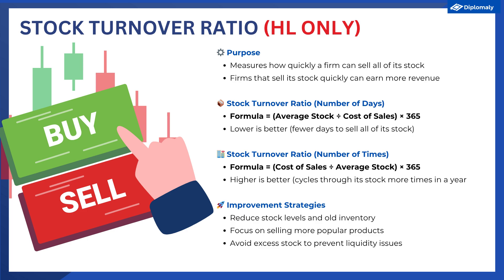The first one is the stock turnover ratio. This calculates how long it takes the firm to sell all of its inventory. We can measure this in two ways. The first way is to measure the stock turnover in number of days — how many days it takes for a firm to sell all of its stock — and this is calculated by average stock divided by cost of sales times 365. For a business, the lower this number, the better.